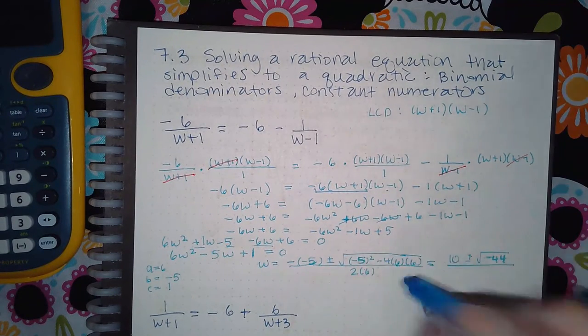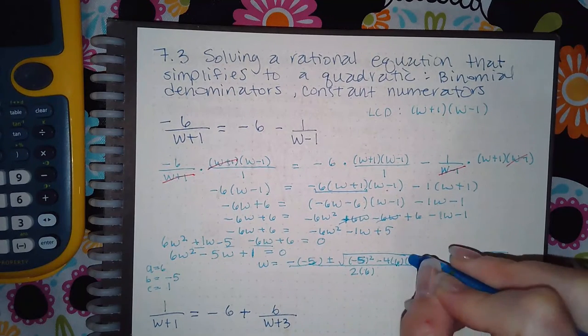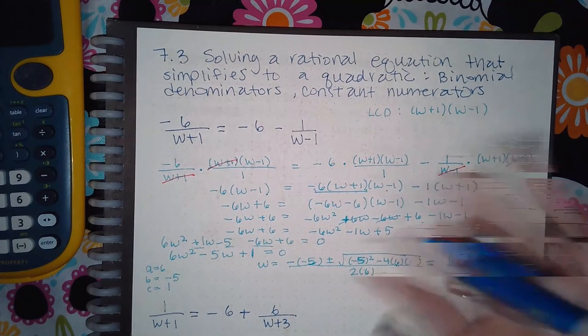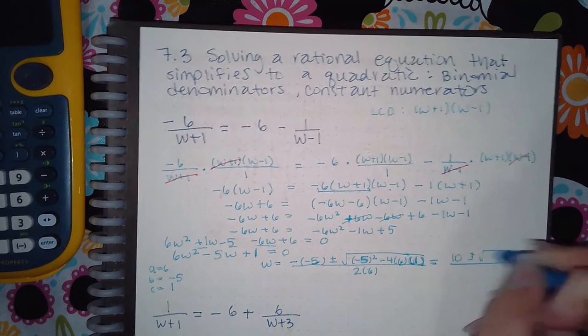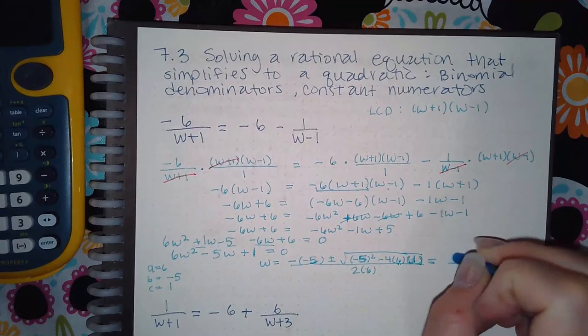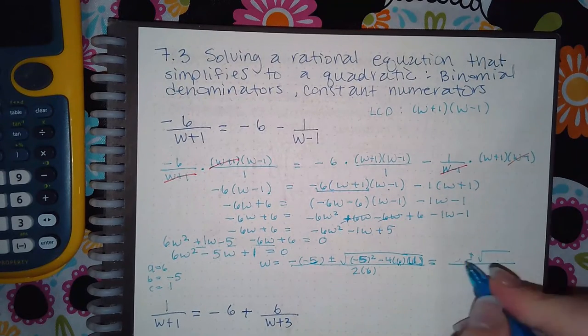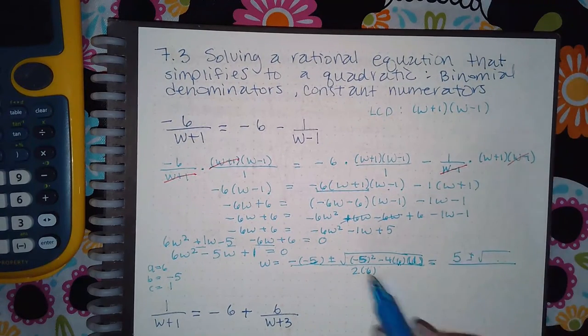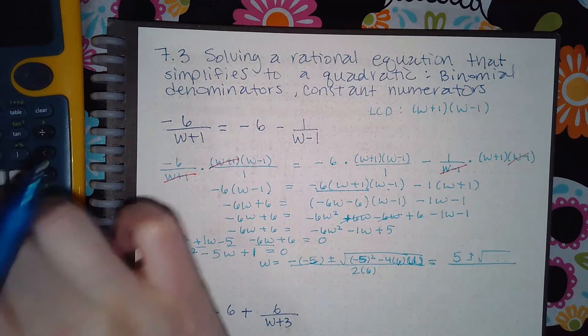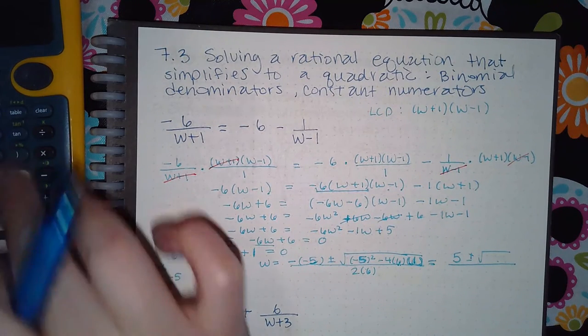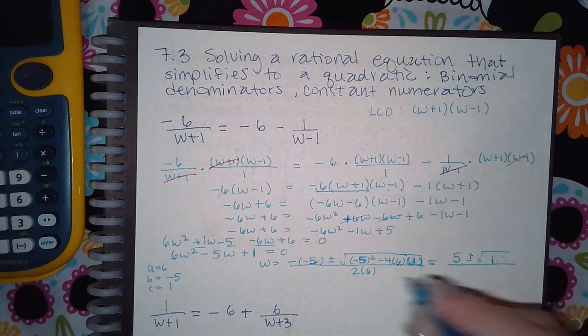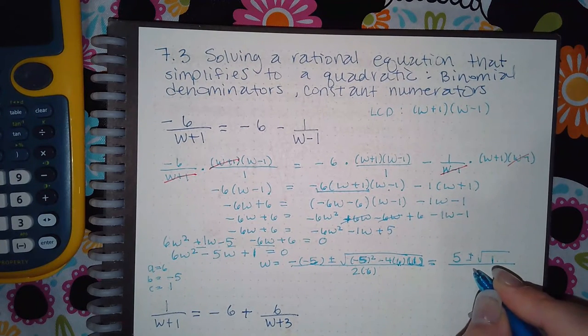So b squared minus 4a and then c. So when I plug this into the calculator, a negative 5 is going to be a positive 5, and then I'm going to have negative 5 squared minus 4 times 6 times 1. I just get 1. And then 2 times 6 is 12.